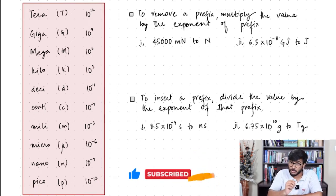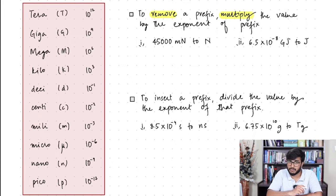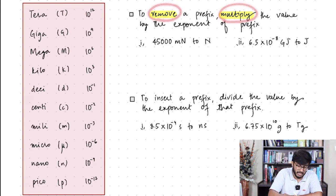Now the rule is: if you want to remove a prefix, you multiply the value by the exponent of that prefix. I'll repeat: if you want to remove a prefix, you multiply the value by the exponent of that prefix.